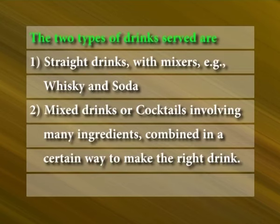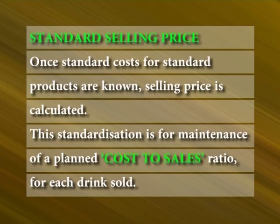The two types of drinks served are straight drinks with mixtures — for example, whiskey and soda — and mixed drinks or cocktails involving many ingredients combined in a certain way. Standard selling price: Once standard costs for standard products are known, the selling price is calculated. This standardization is for maintenance of a planned cost-to-sales ratio for each drink sold. All ingredients are included for costing. Selling prices are fixed in relationship to the costs, and every sale has an impact on the overall gross profit. Therefore, planning and maintaining of profit levels is possible.